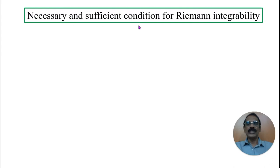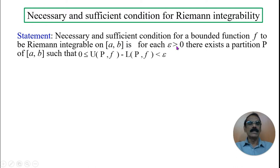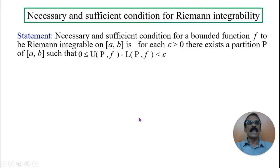The statement of this theorem gives a necessary and sufficient condition for Riemann integrability. The necessary and sufficient condition for a bounded function f to be Riemann integrable over the closed interval [a, b] is: for each epsilon greater than 0, there exists a partition P of [a, b] such that 0 ≤ U(P, f) − L(P, f) < epsilon.